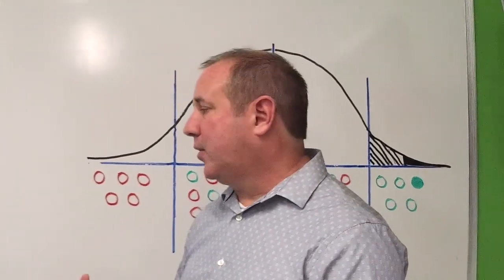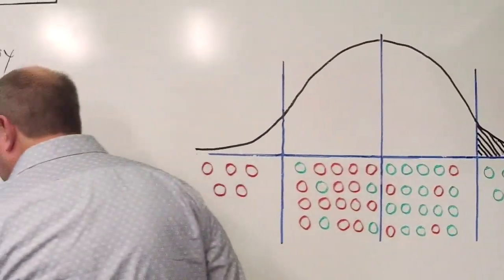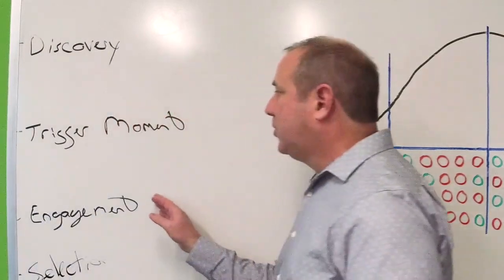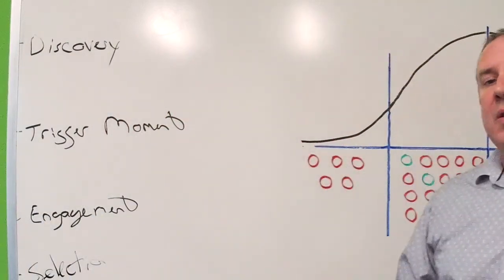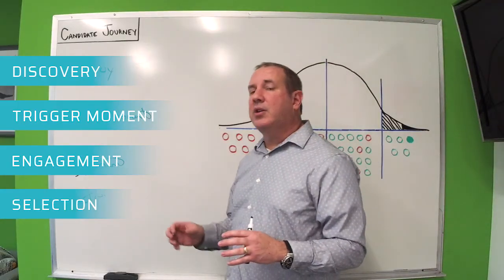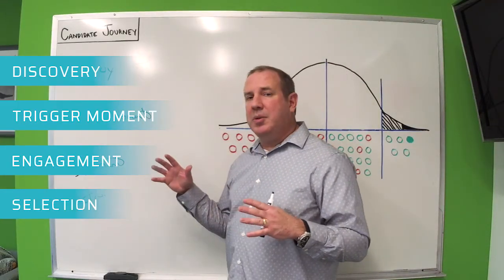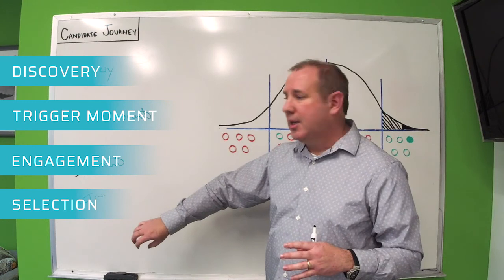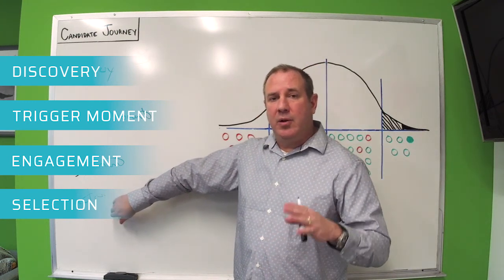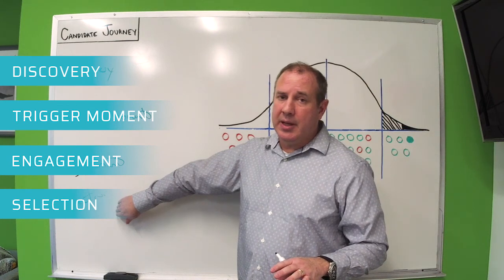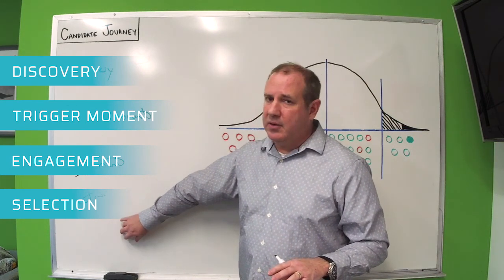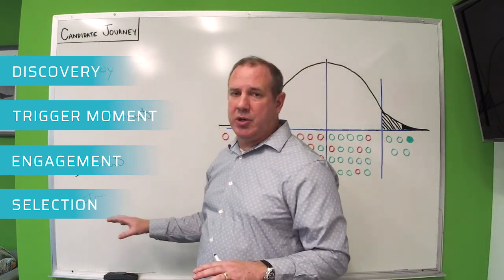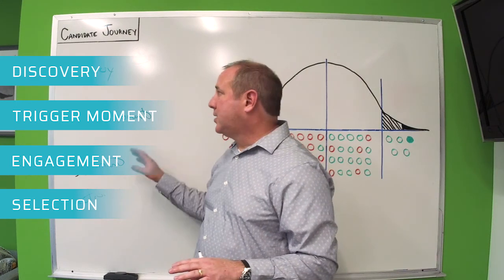Then finally, the last final stage is the selection process. So now that they've gone through their engagement period, their due diligence period, now they're selecting specific franchises. They'll typically look at three different types of brands. It could be same industry, it could be different industry. But they're really filtering down to a very specific brand. This is where you'll see the final real serious candidates come into play. So they're inquiring. This is the FDD stage, discovery day, discovery day visits. And this is where the whole candidate journey process takes place.